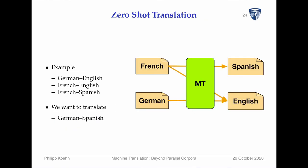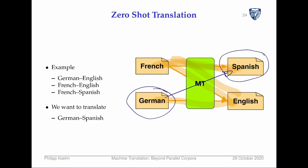Throwing everything together — a French-English corpus, French-Spanish corpus, and German-English corpus — the system does well on translating French-English, French-Spanish, and German-English. But can it also translate from German to Spanish, which is called zero-shot? The system has never seen any training data for that direction, but it has learned to encode German and learned to generate Spanish, so there's reason to believe it might pull it off.